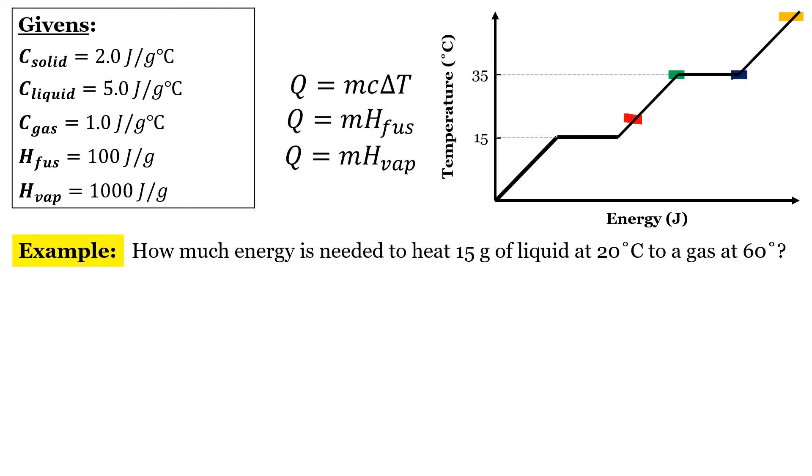So in this case, we're going to have three steps. Our first step is going to be to raise the temperature of our liquid from the red point to the green point. Our second step is going to be to transition from a liquid to a gas, going from the green point to the blue point. And then the final step will be to increase the temperature of our gas from 35 degrees to 60 degrees.